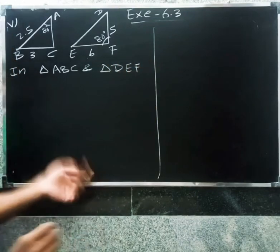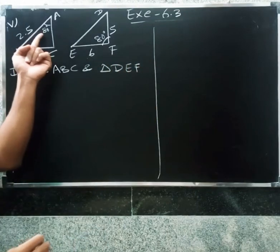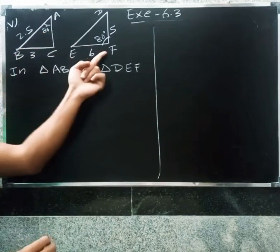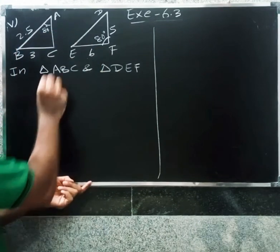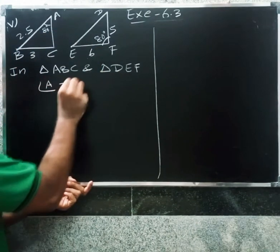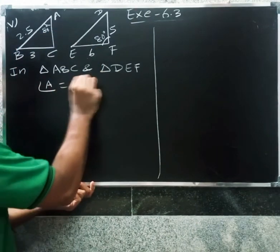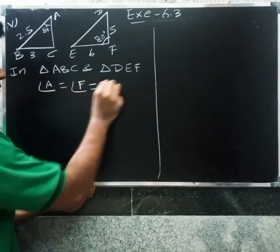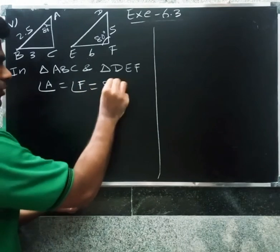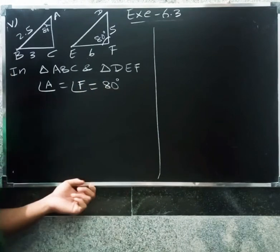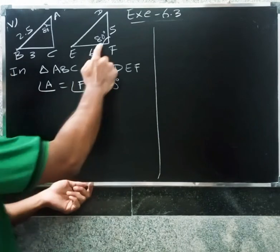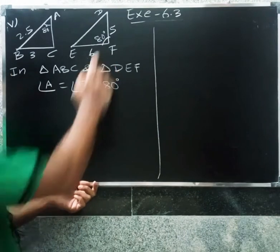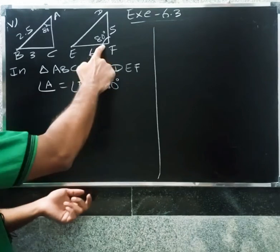Fifth question: triangle ABC and triangle DEF. Angle A equals angle F, checking the angles of both triangles.